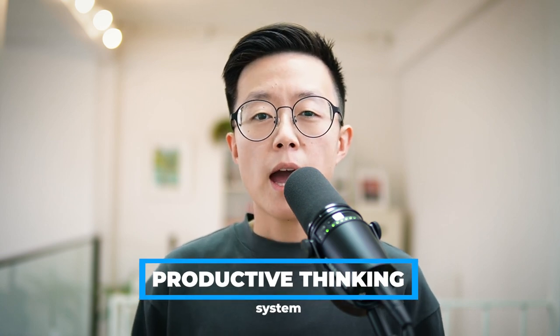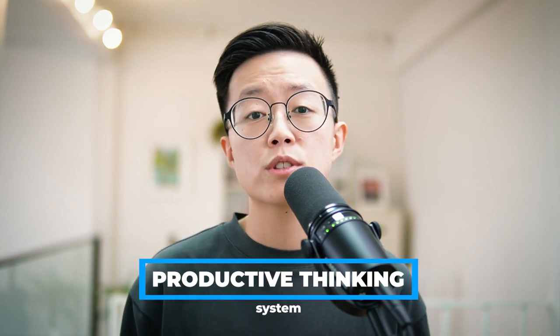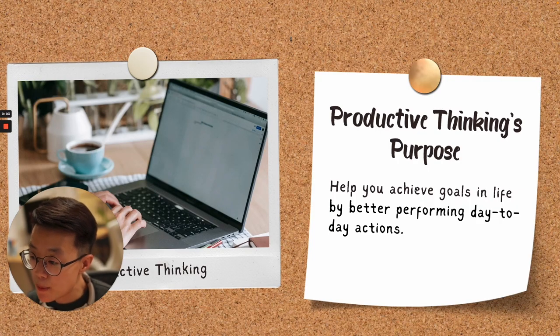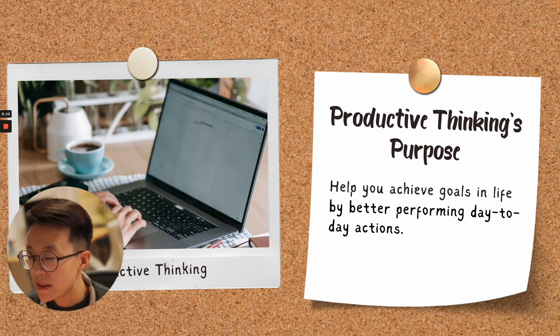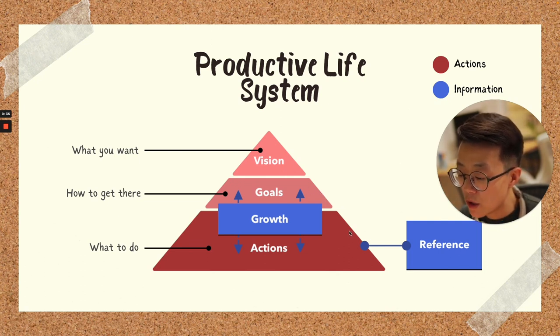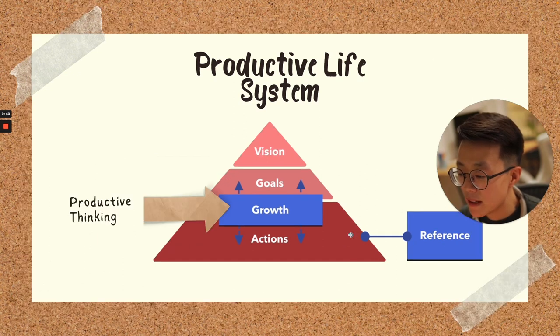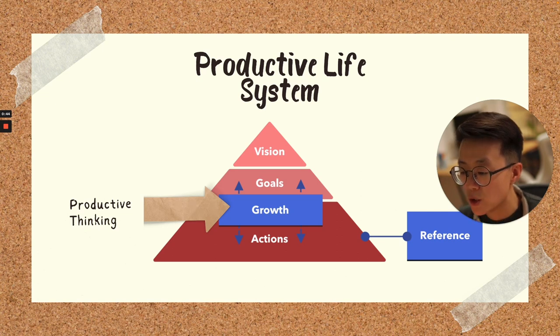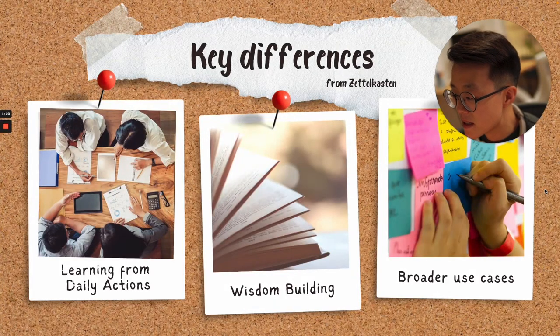I would like to introduce you to the adapted version of Zettelkasten, which I call Productive Thinking. I named it differently because it is not exactly the same as the original Zettelkasten and has some key differences. While the original Zettelkasten system is to help scholars write better publications, the Productive Thinking system is to help anyone achieve their goals. You can look at this with the broader picture of the entire productivity system. If you want to be productive in your life, you should have a system to clarify your vision, clarify your goals, and manage your daily actions. This Productive Thinking system helps bridge between your daily actions and your goals by helping transform your mind to better perform daily actions.